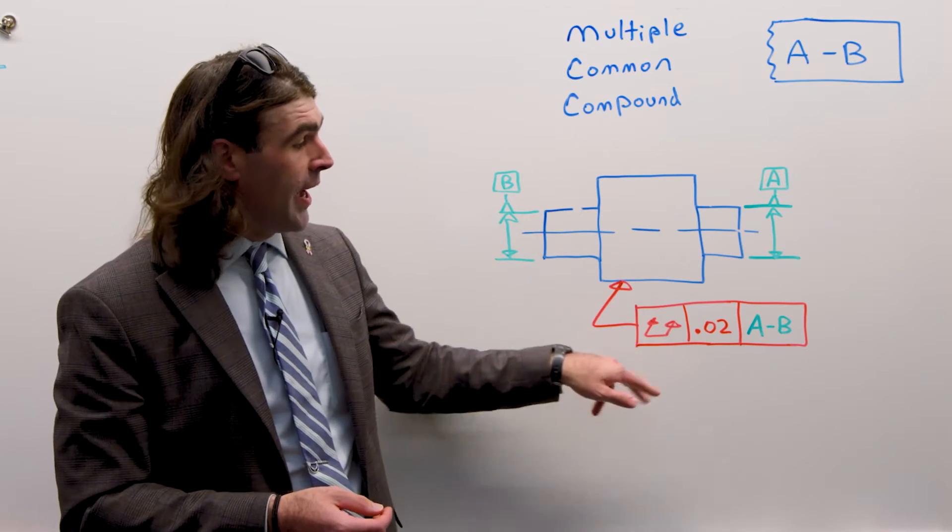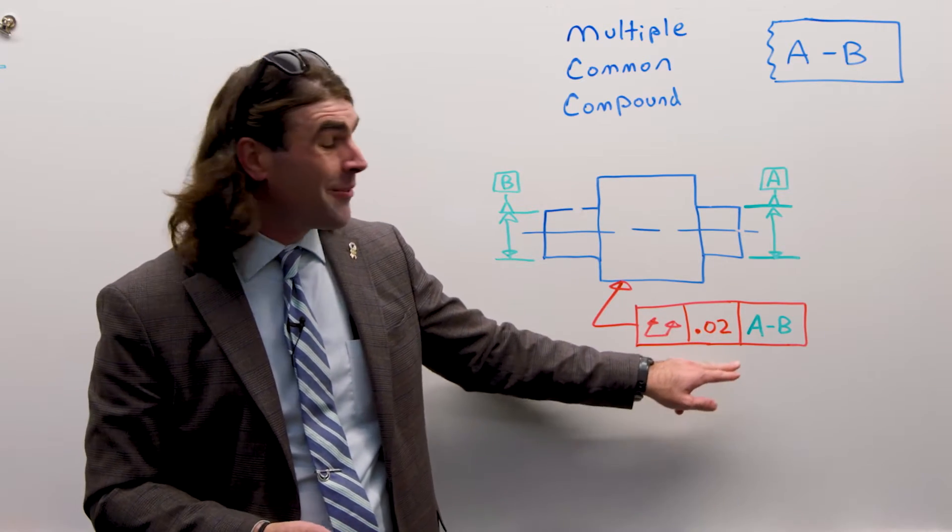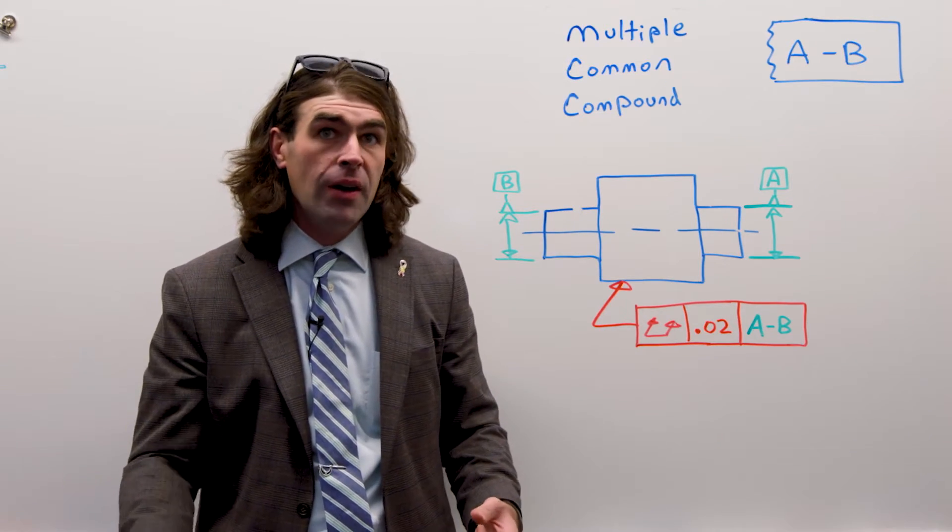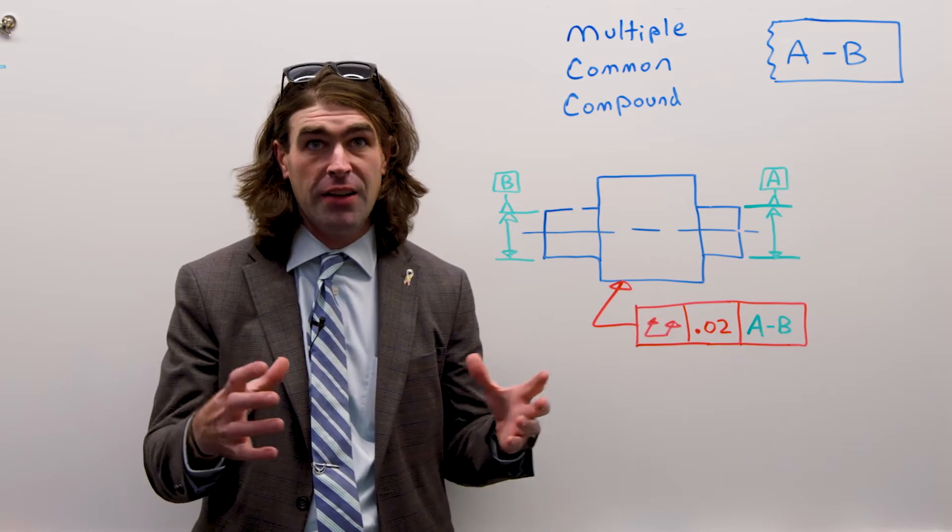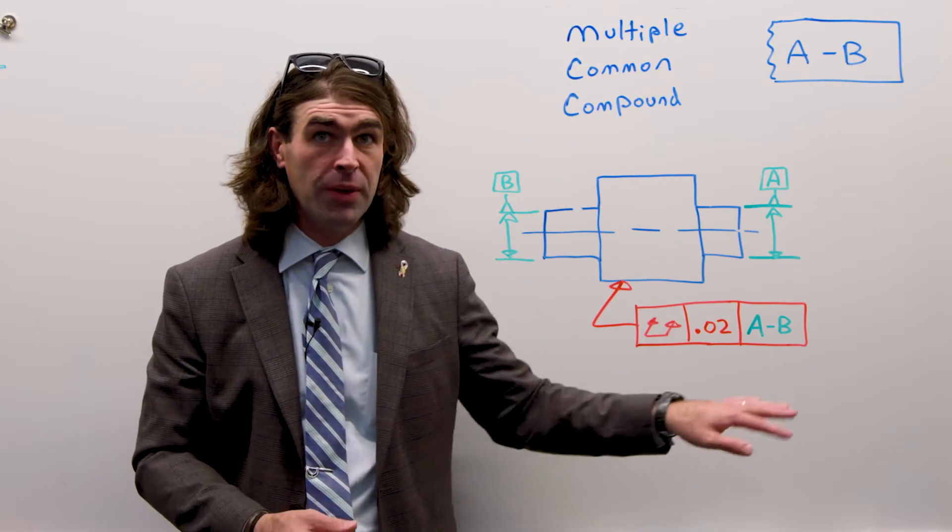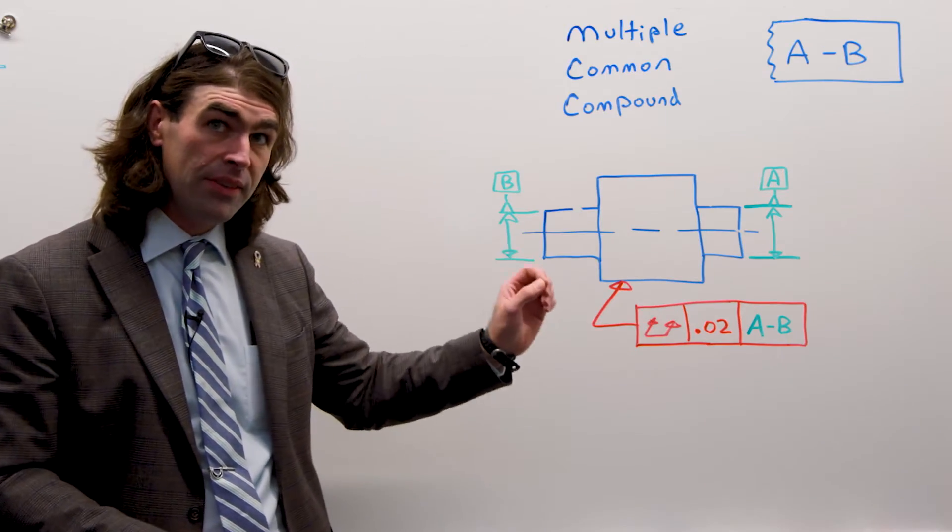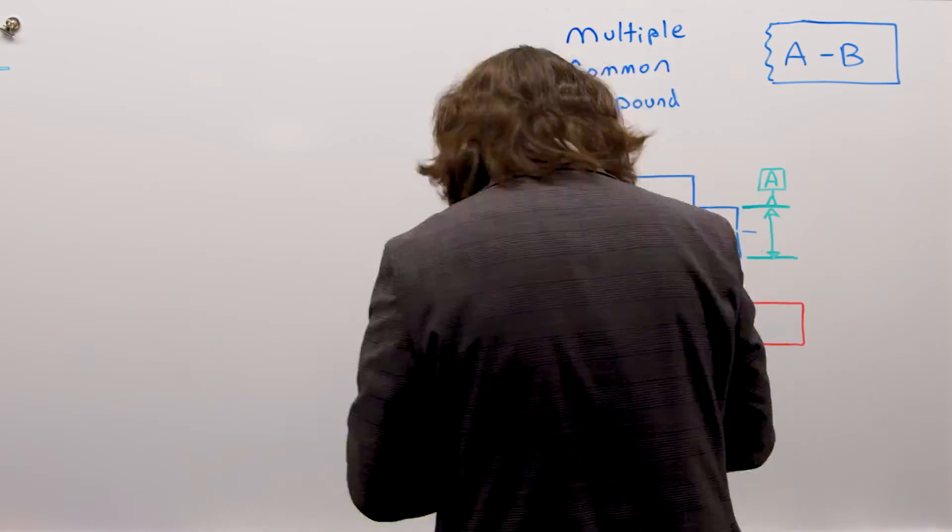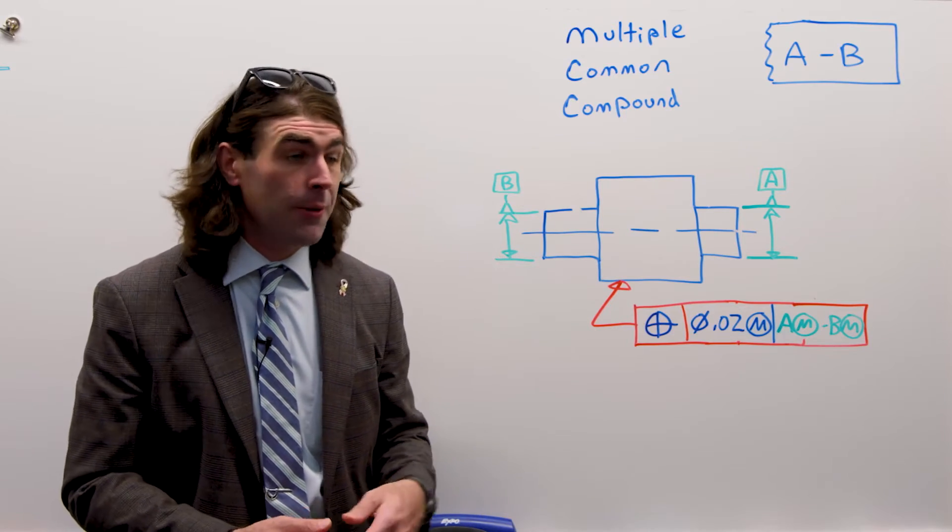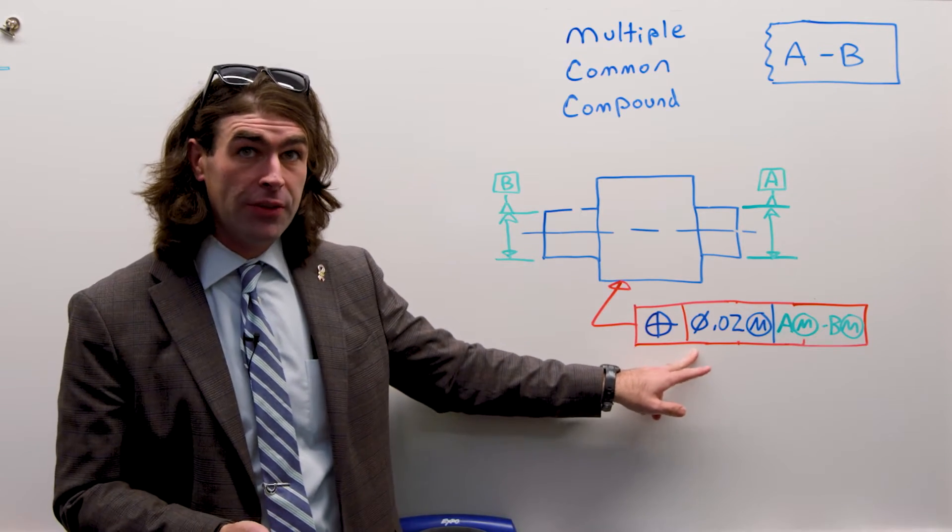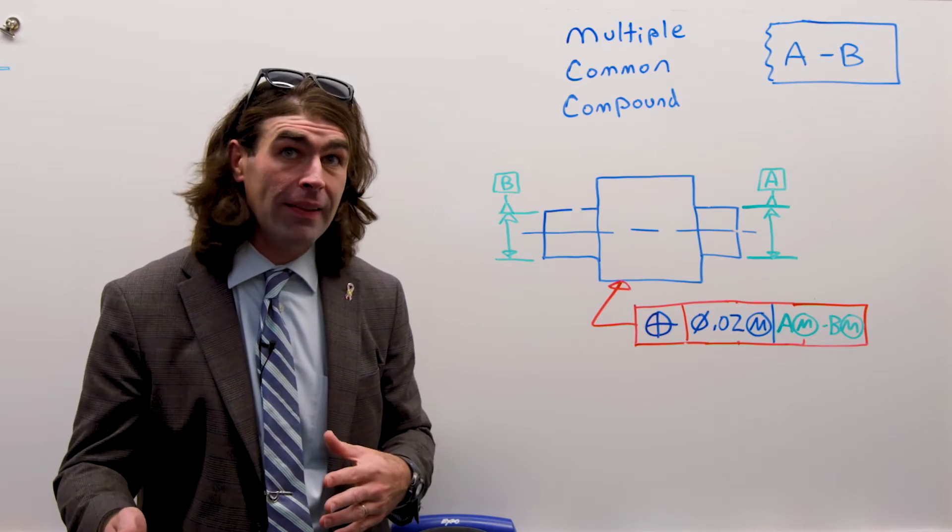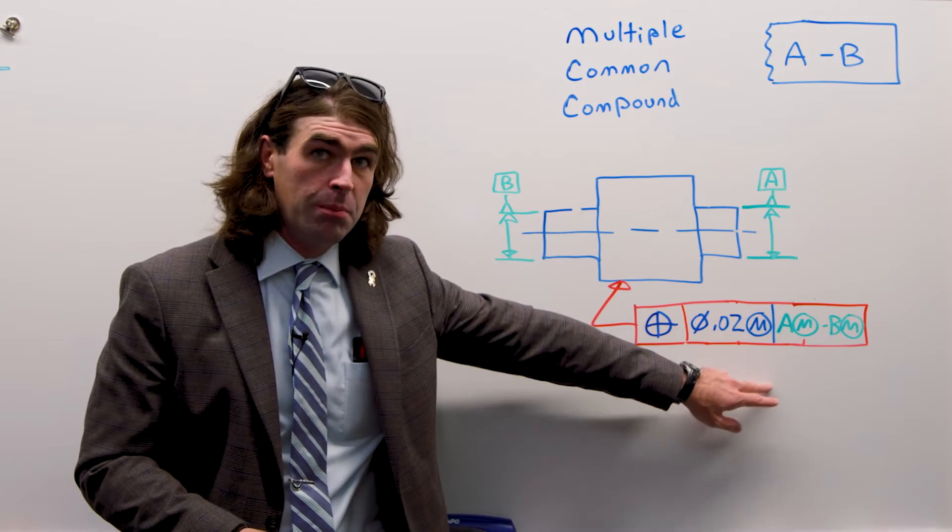Now, when we use runout, of course, there's no MMC with the tolerance, and we cannot have an MMB, maximum material boundary, with the datum feature. That just means no matter what, you're supposed to have that collapsing datum simulator. Whether that really happens in real life is another question, but that's what the drawing requires. If we use position, we have, at the very least, more flexibility. So we've got a cylindrical tolerance zone now. We're not checking the surface. We're trying to see if the axis of this large diameter is within a tolerance zone relative to datum axis A-B.